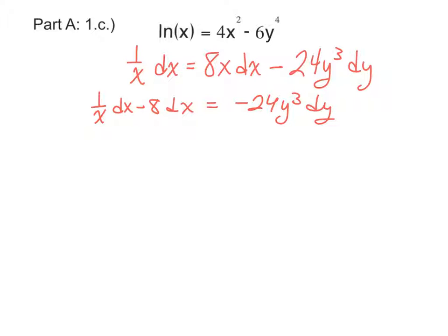Before we start dividing, I want to simplify this left-hand side. I notice that each term here has a dx in it. So I'll factor that dx out. We'll be left with 1 over x minus 8. Right-hand side is staying the same.